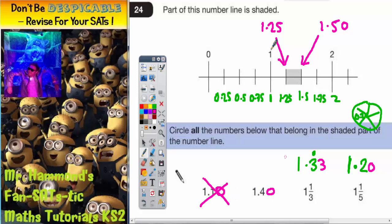1.40 is between 1.25 and 1.50. So 1.40 definitely would be. 1.33, that definitely lies between 1.25 and 1.50. So this one is.